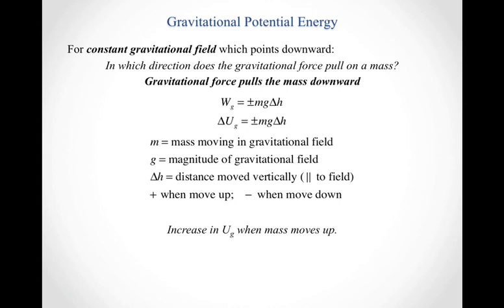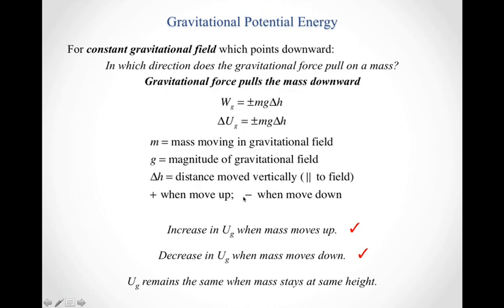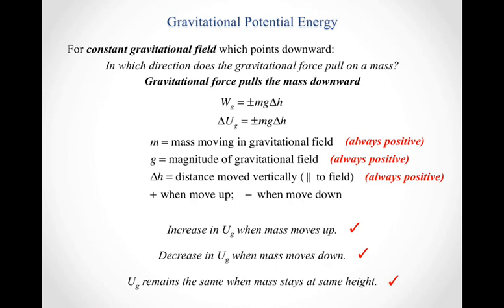When do I need the positive, and when do I need the negative? I need the positive when the mass moves up and the negative when the mass moves down. Increase in gravitational potential energy when the mass moves up — yes, because I put a positive out front. Decrease in gravitational potential energy when the mass moves down — yes, because I put a negative out front. Gravitational potential energy remains the same when the mass stays at the same height because delta h is zero. In this formulation, mass is always positive, g is always positive, and delta h is also always positive because I'm taking care of the sign out front.